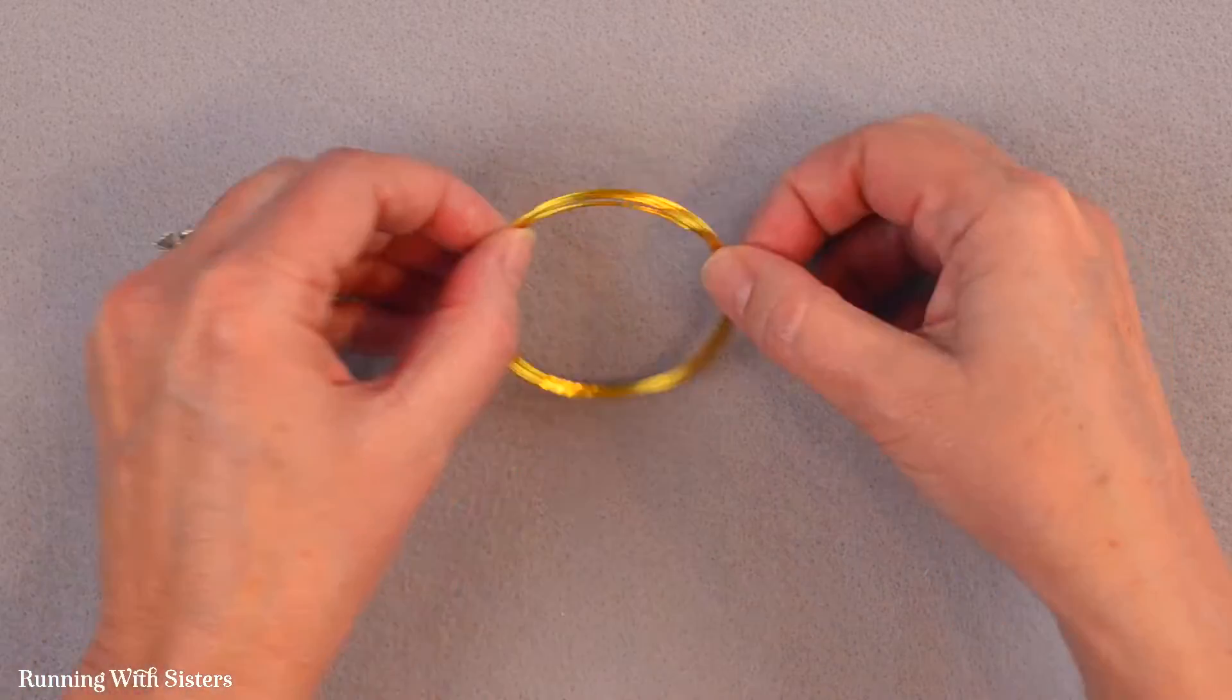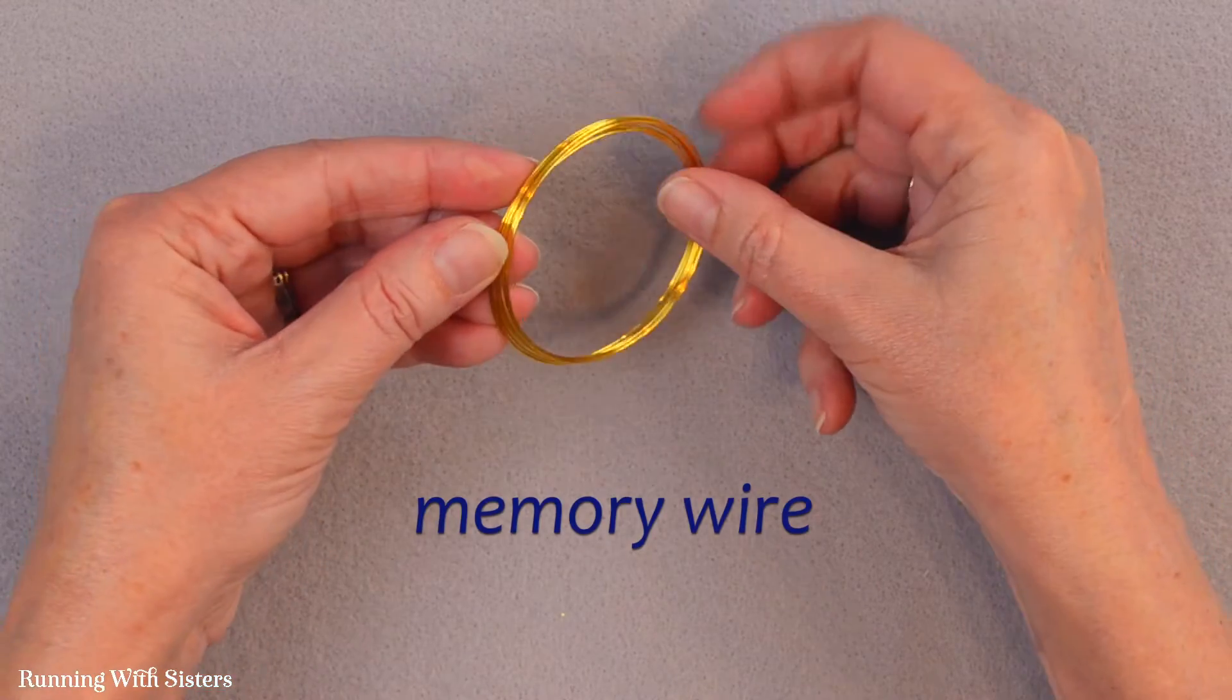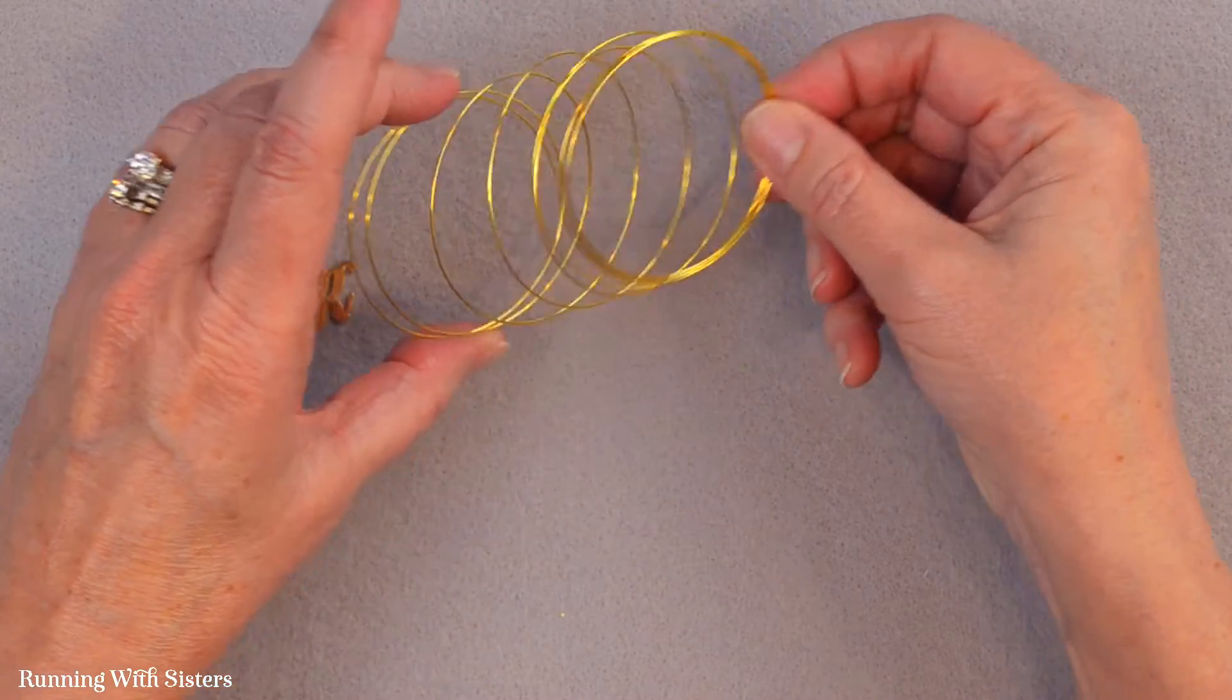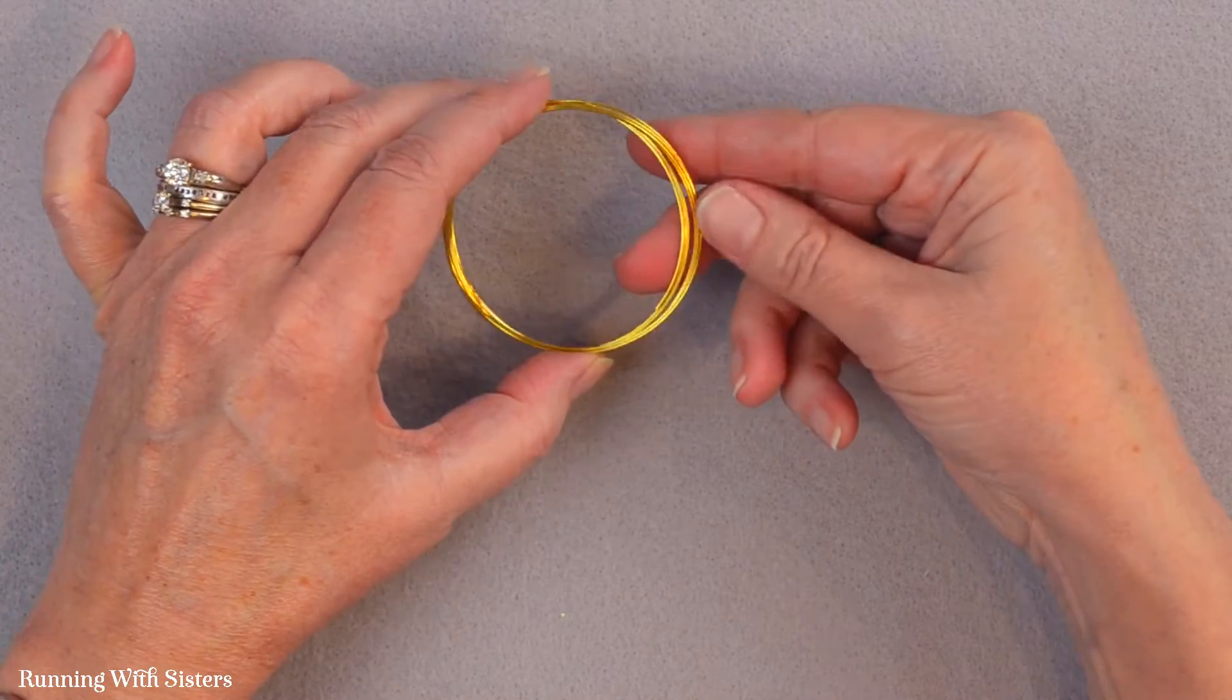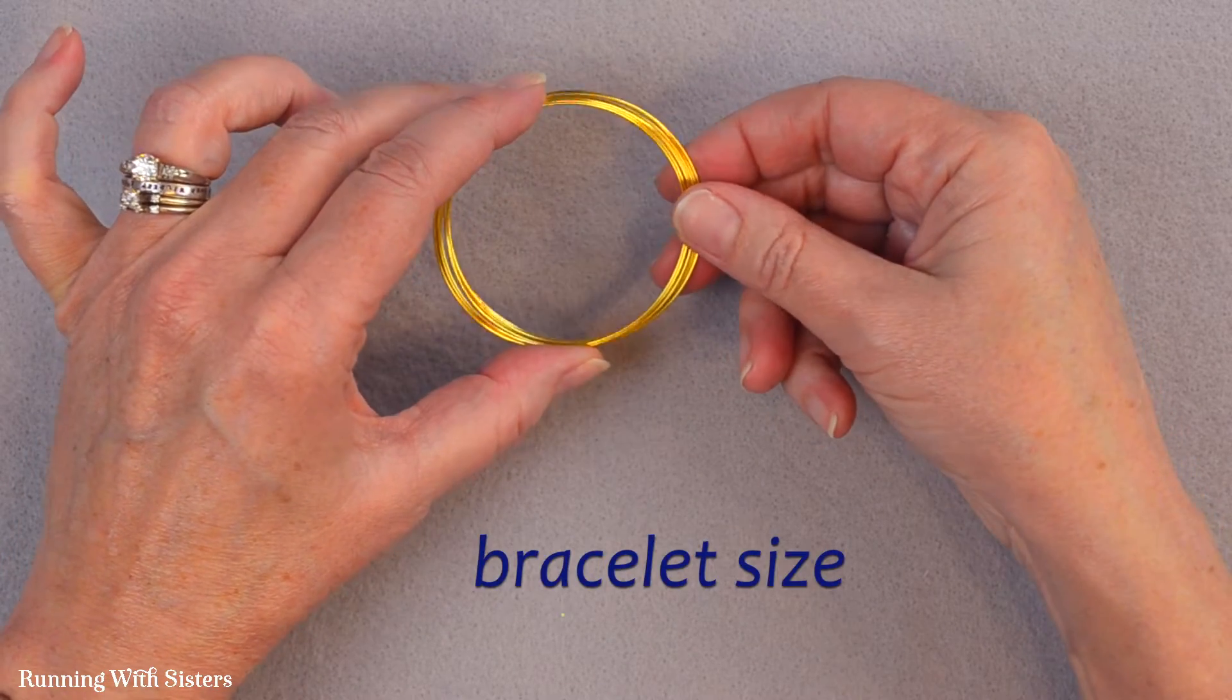To make the charm bangle we're going to use memory wire. Memory wire is wire that's always in the same shape. It's like a slinky. It retains this circular size. And you'll want to buy bracelet size memory wire.